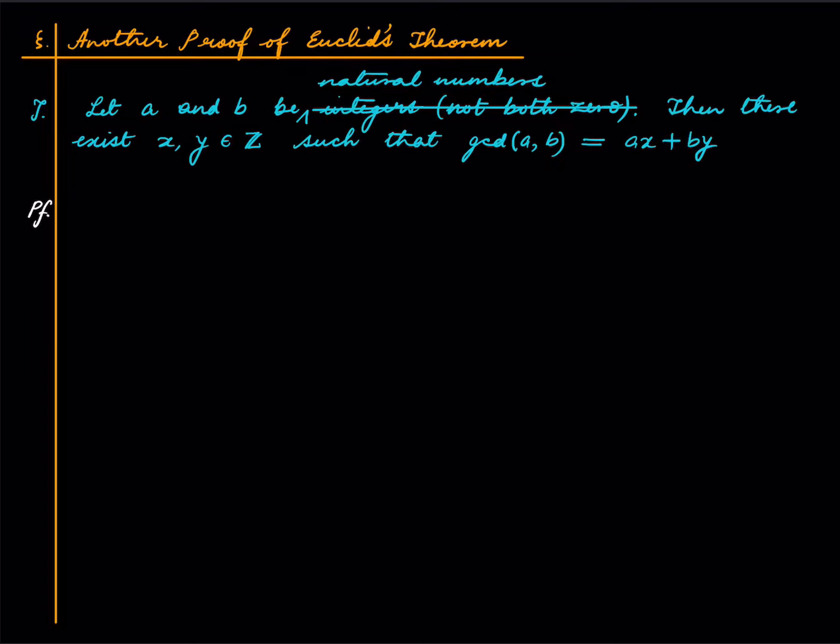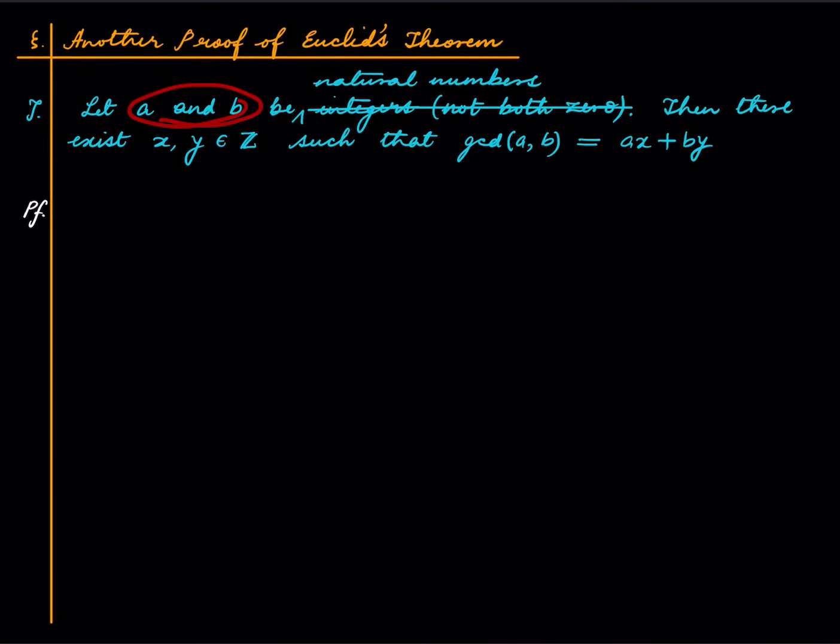Because if we have a negative integer here, then we can just replace that by minus A. It becomes a natural number. And now if we do this, taking care of the signs, you will have shown that for A and B also. So all I am trying to say is that it is enough to prove Euclid's theorem for the case when A and B are natural numbers. So that is what we will do.